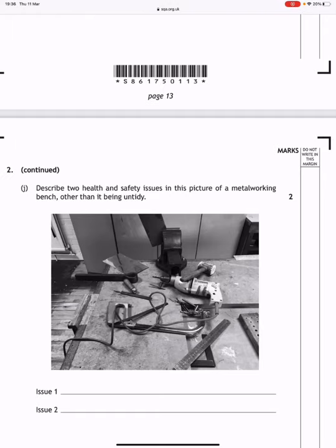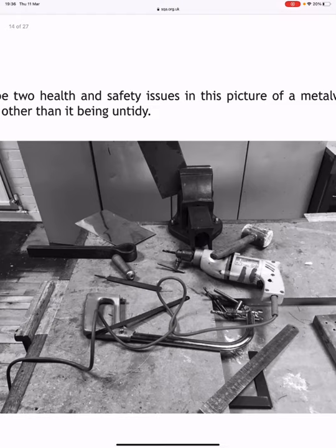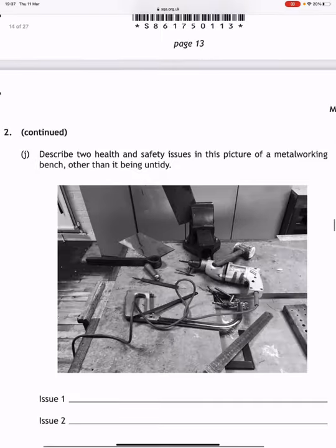Describe two health and safety issues in the picture of a metal working bench, other than it being untidy. We've got a bit of metal and folded bars overhanging the edge of the bench. They might fall off and hurt someone. We've got another bit of metal still in the device which could hurt someone walking by. The chuck here looks like it's still in the drill. We have a hacksaw blade just lying on the bench. We have a file where the handle has come off just lying on the bench. So these are possible safety issues with this layout.